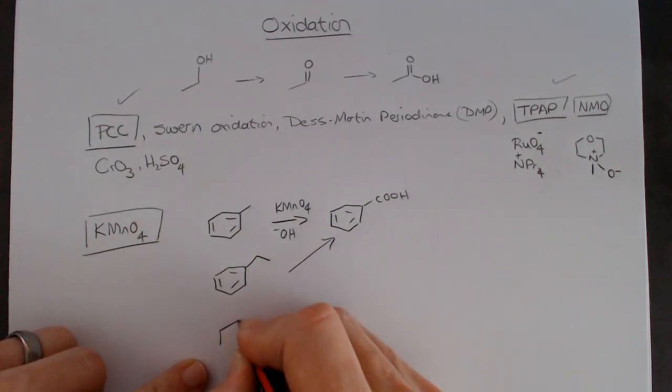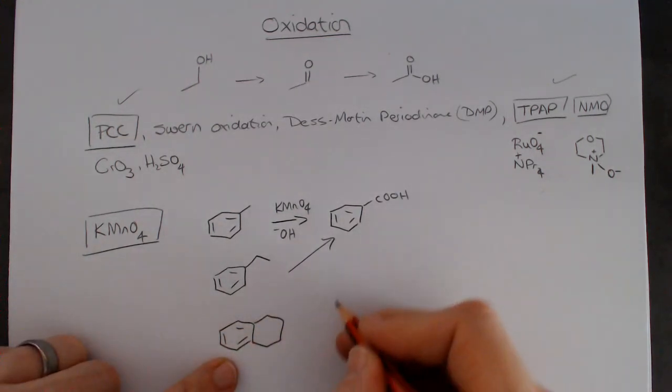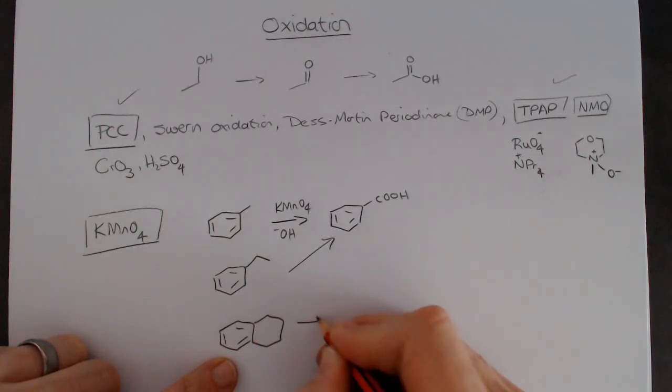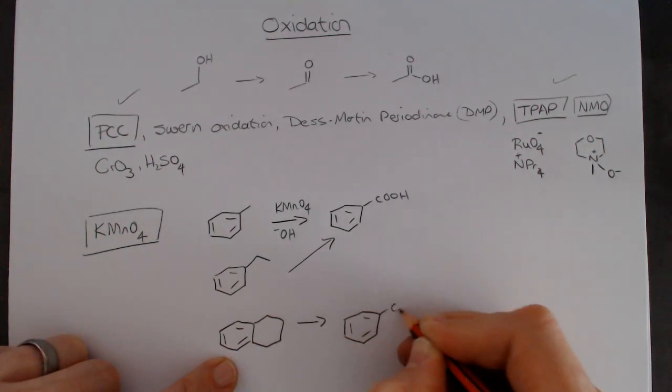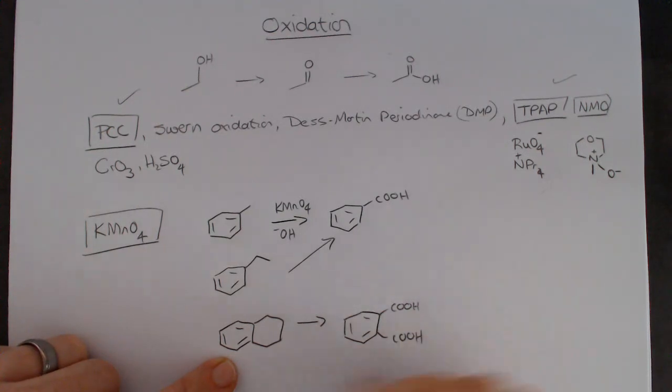And another example is if we took this structure over here. So we've got the two six-membered rings, and we treat it with KMnO4, what happens is we actually cut the two ends off, and we get this dicarboxylic acid over here. So KMnO4 is really, really a strong oxidizing agent.